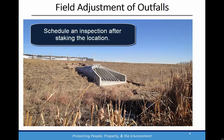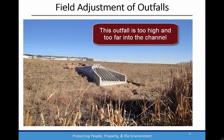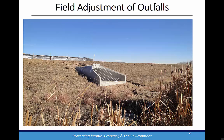It is fairly common that surveys don't accurately reflect field conditions for a variety of reasons. The goal is to locate the outfall so that it matches as closely into existing grades as possible and is neither recessed too far into the bank nor penetrates too far into the channel. In addition, the outfall invert elevation must be set between 12 to 24 inches above the receiving channel invert or normal water surface elevation.